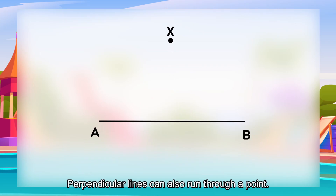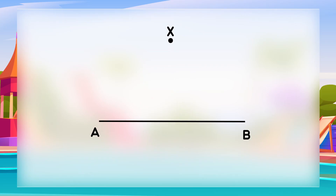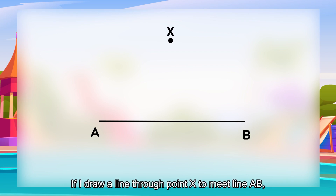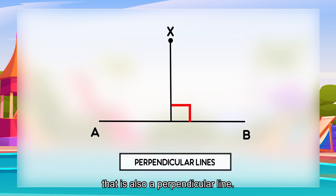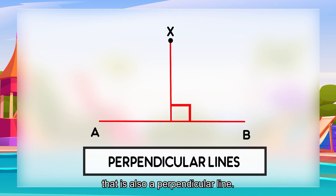Perpendicular lines can also run through a point. If I draw a line through point X to meet line AB, that is also a perpendicular line.